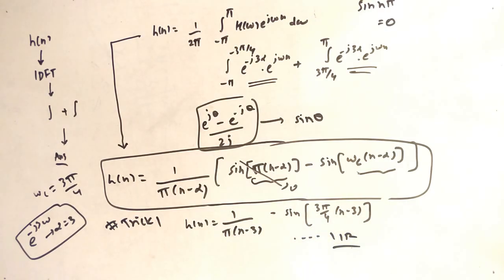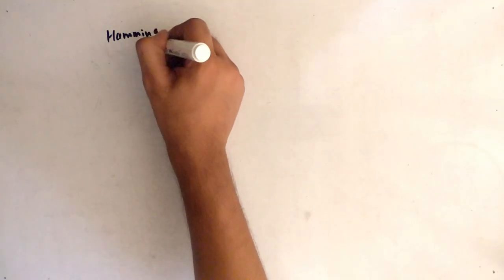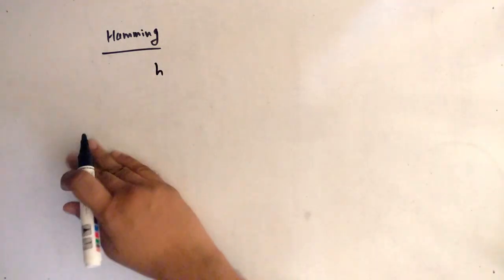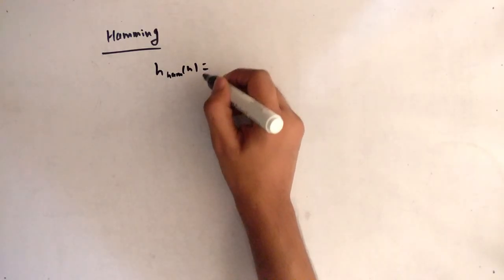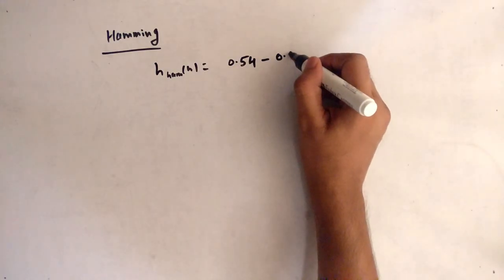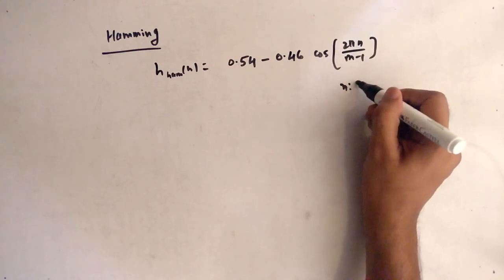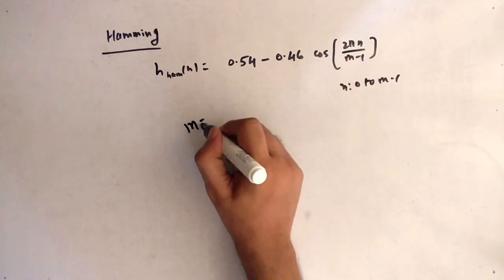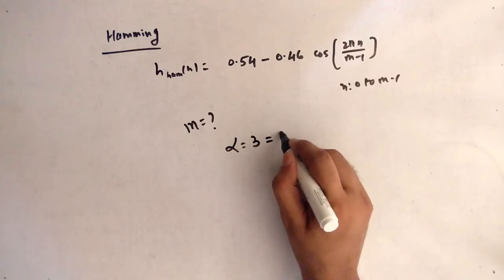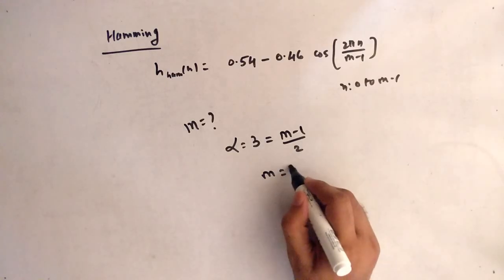This is the IIR h(n). Now for the Hamming window: h_ham(n) = 0.54 − 0.46·cos(2πn/(M−1)), where n ranges from 0 to M−1. Since α = 3 = (M−1)/2, we get M = 7, so n ranges from 0 to 6.